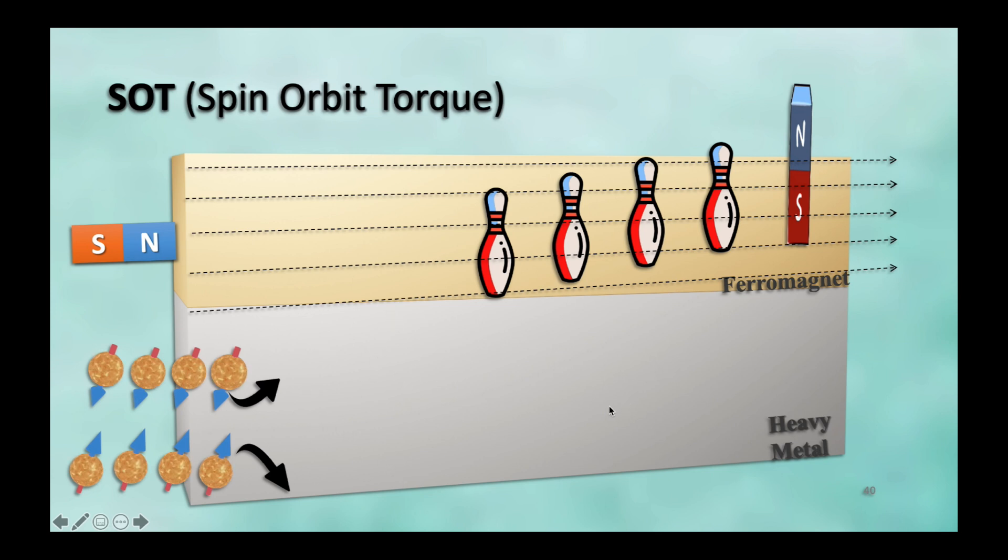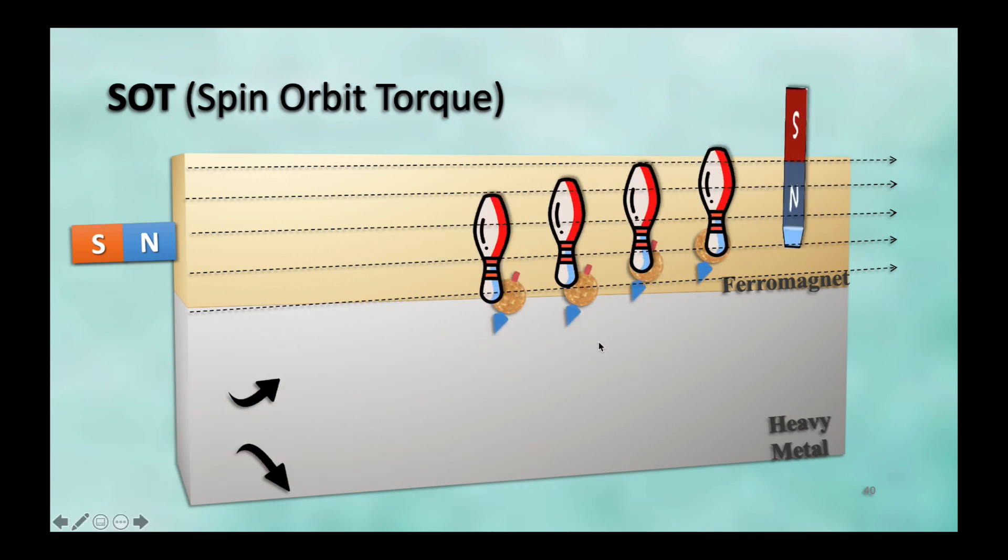And then, we pass this charge current in heavy metal and due to strong spin orbit coupling, the bulk spin Hall effect will cause different kinds of electrons to go in different directions perpendicular to the charge current. So, we can see that different spins go into different directions. And, they will transfer their momentum to the moments of this free layer ferromagnet. And, thus, we can achieve magnetization reversal. So, this is the spin orbit torque switching or writing mechanism.